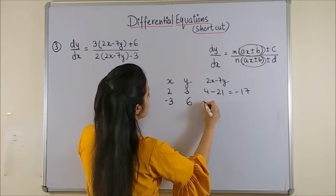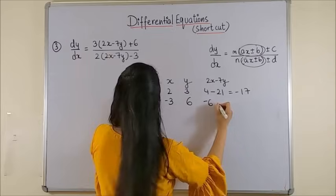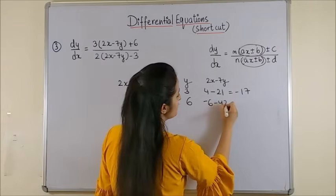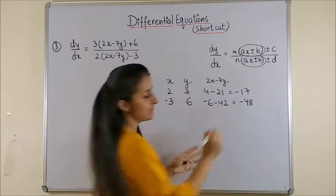Next, it's 2 into minus 3. That's minus 6. Minus 7 into 6. That's minus 42. So, you get minus 48.